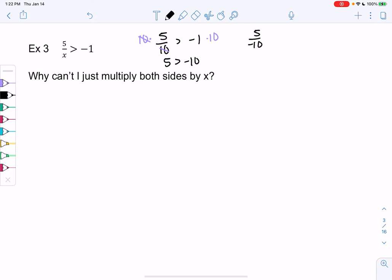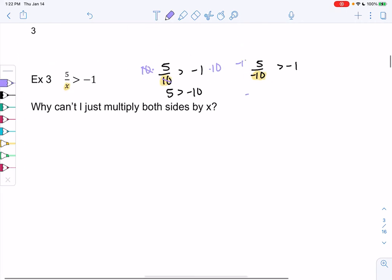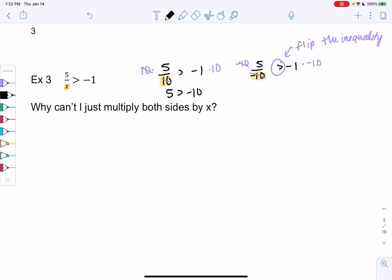What if instead we say negative 10? I'm just plugging in different values for x that may or may not work. When we have a negative, we're going to multiply both sides by negative 10. But multiplying by a negative tells me to flip the sign, the inequality. So we end up with 5 is less than 10, which is also a true statement.